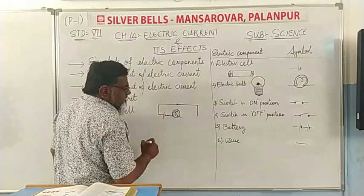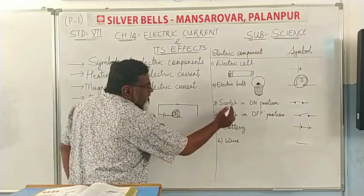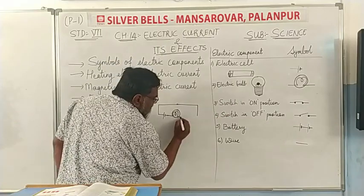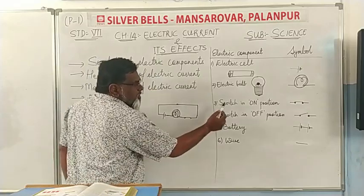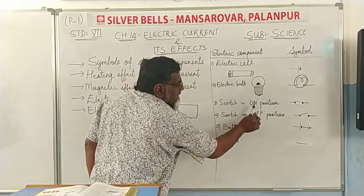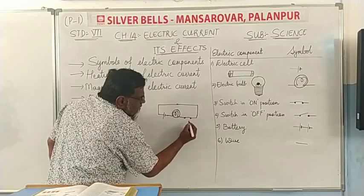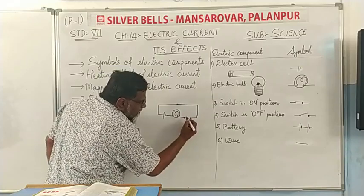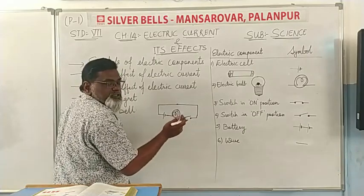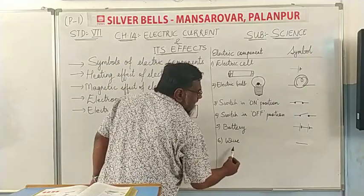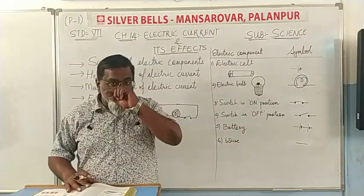This is the battery and this is the electric bulb. Now the circuit will be complete when these two wires join. The switch can be on or off. When the switch is in the on position, the circuit is closed; when it is open, the switch is in the off position.